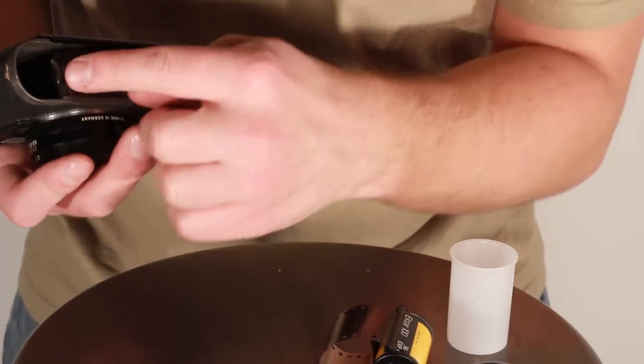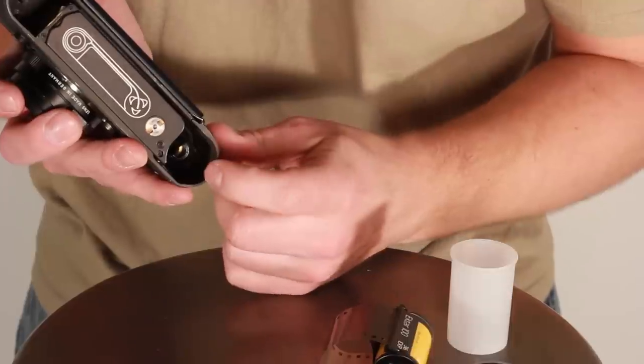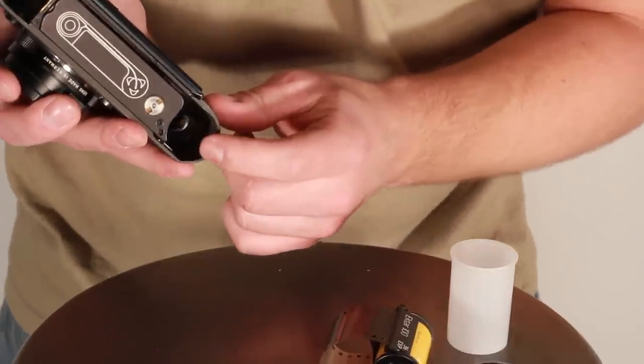We have where the film canister goes here, and then we have the take up on this end. You can see there's veins in there that the film has to slide under.